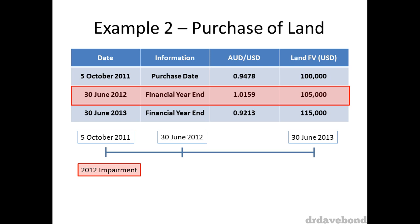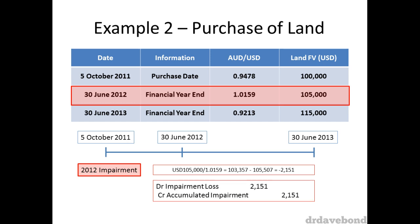On the 30 June 2012 the land was impaired, even though the US dollar value increased — this obviously seems somewhat counterintuitive. What we're concerned with is the change in the functional currency amount. Even though the land value in the US increased from $100,000 to $105,000, the AUD strengthened from 0.9478 to 1.0159 during the same period. Using this new rate yields an AUD valuation of $103,357. For ease of calculation this value is assumed to be the recoverable amount, though in reality a proper calculation would be required. This is a drop of $2,151 and is recorded through profit and loss as usual.